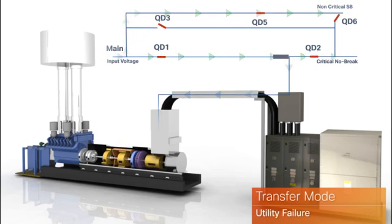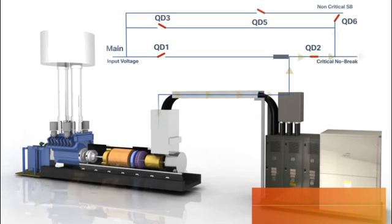In a power outage, the system transfers energy stored in the flywheel to electricity, supplying the data center with continuous power until the system's engine generator starts or utility is restored.